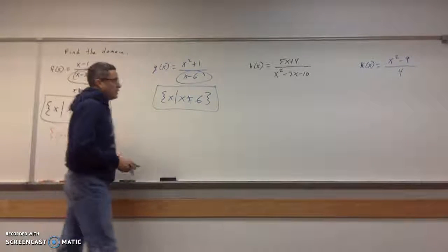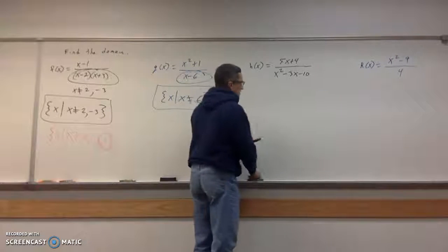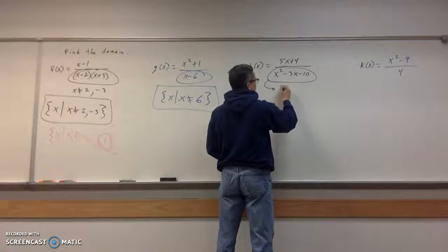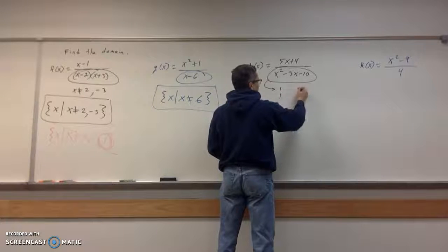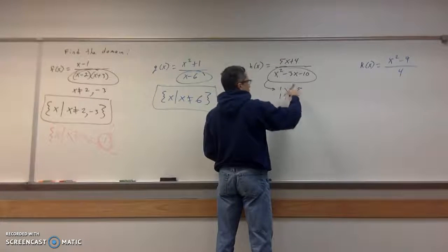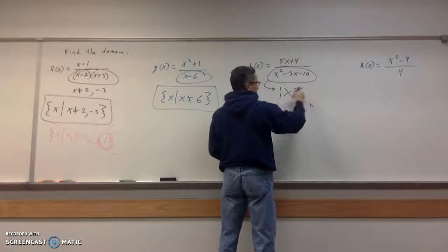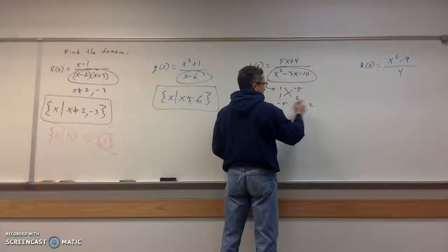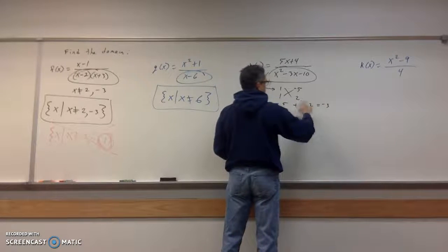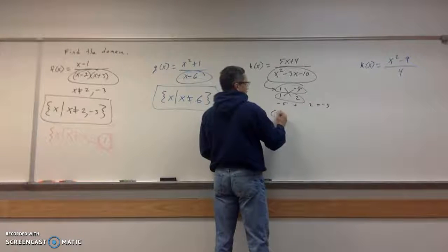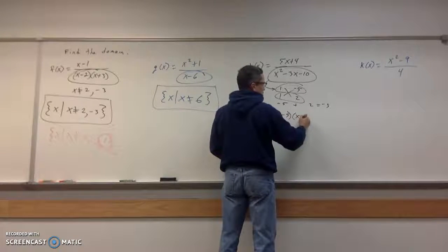The next one's a little tougher. Don't care about the numerator. It's all about the denominator. Okay, so let's factor it. I'll give you the old x thing here. 1 times 2 is 2. 1 times negative 5 is negative 5. Negative 5 plus 2 is negative 3. So I've got the right combinations. So we're looking at x minus 5 and x plus 2.